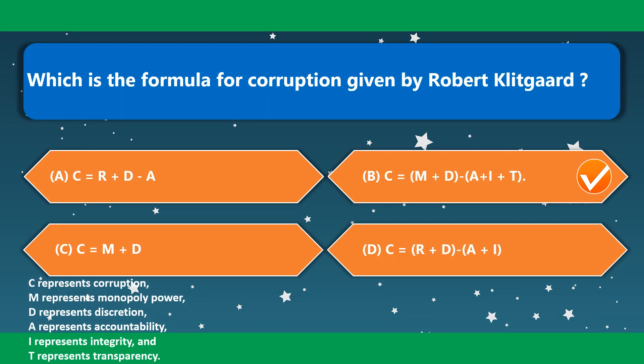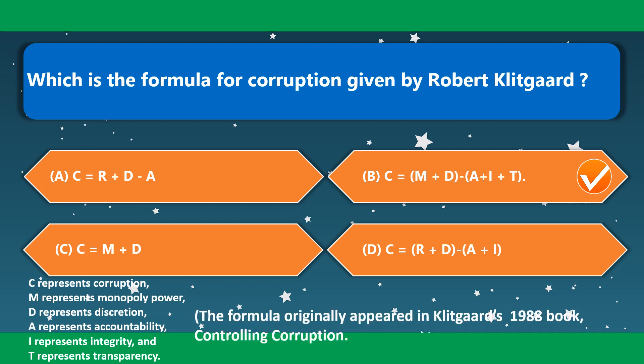What is the formula for corruption given by Robert Klitgaard? The correct option is option B: C = M + D − A + I + T. C represents corruption, M represents monopoly power, D represents discretion, A represents accountability, I represents integrity, and T represents transparency. This formula originally appeared in Klitgaard's 1988 book 'Controlling Corruption.'